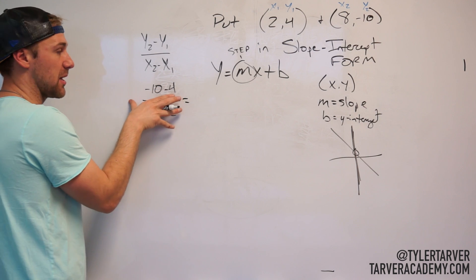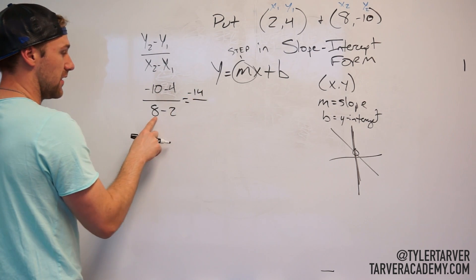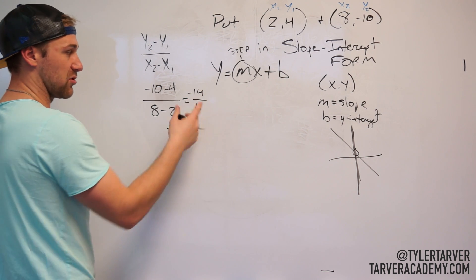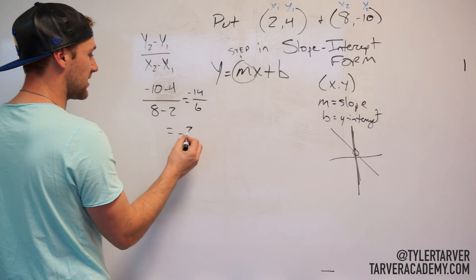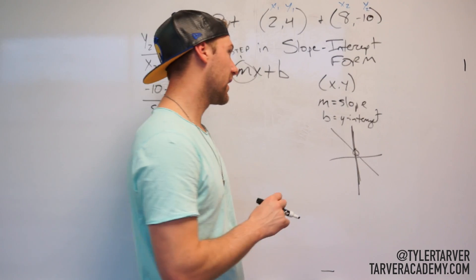Solve the top first. Look at them as like two separate problems. Negative 10 minus 4 is negative 14 and then 8 minus 2 is 6. Okay, can that be reduced? Yes, it can because those are both even numbers. It can be negative 7 over 3. Wow, I got a weird slope. Sorry, everybody.